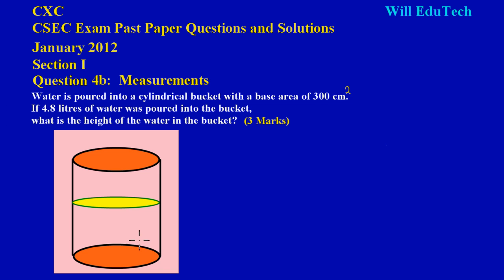They gave us the base area of the cylinder, which is 300 centimeters squared. By the base area they simply mean this circular base down here — I'm shading it in right now. Let's make a note: the base area is 300 centimeters squared.